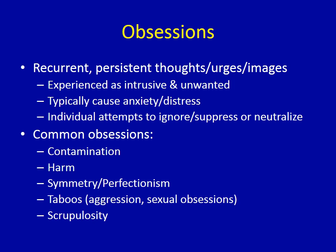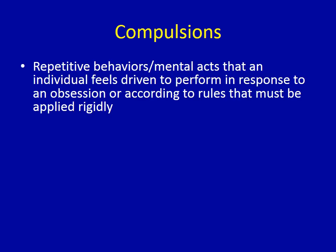The important characteristic that defines obsessions is that these are intrusive, unwanted thoughts that typically cause anxiety and distress, and the person wants them to go away. Compulsions, on the other hand, are behaviors — specifically repetitive behaviors. They might be overt observable behaviors like repeatedly washing your hands, or they might be mental behaviors like reviewing something in your mind, checking things mentally, counting in your mind, or any mental rituals. Just because they're behaviors doesn't necessarily mean they're observable.